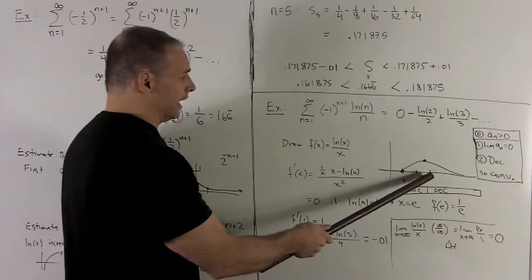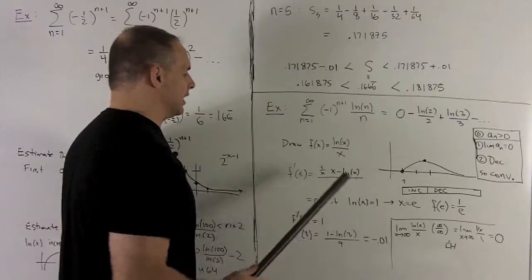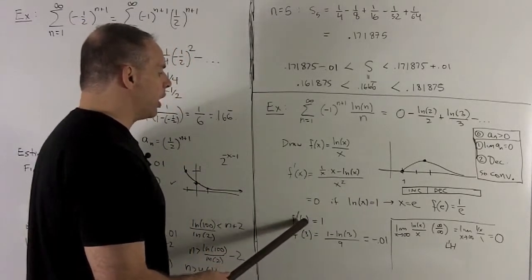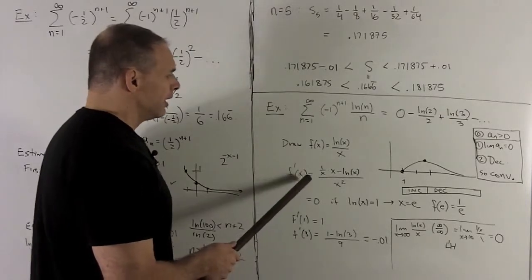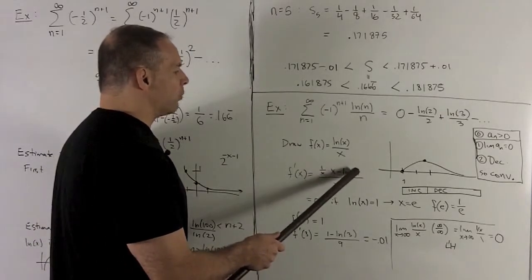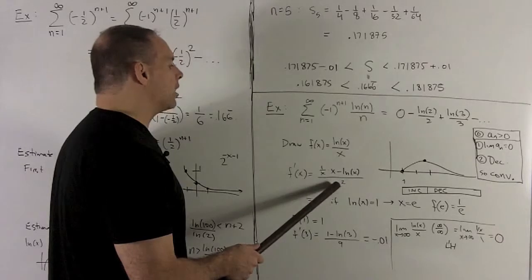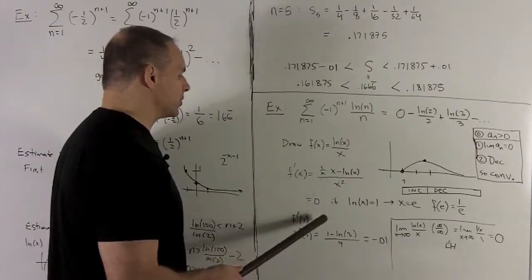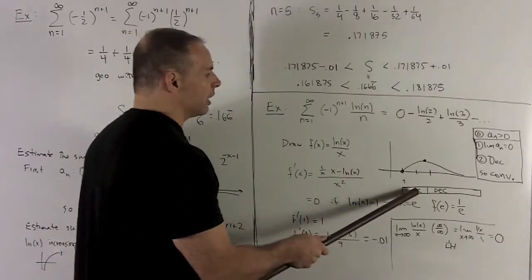We check a point on each side of e. Figure out increasing and decreasing. f prime of 1. That's going to be 1 minus natural log of 1 over 1 squared. So, that's just going to be 1 over 1 squared, which gives me a 1. So, over here, we're increasing.